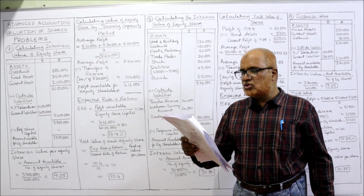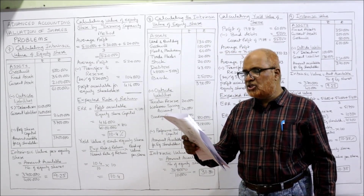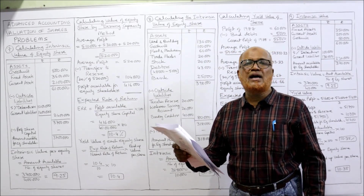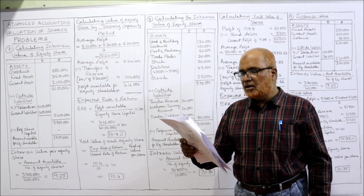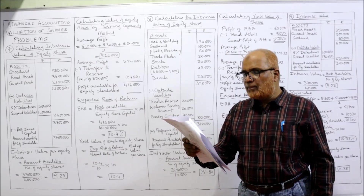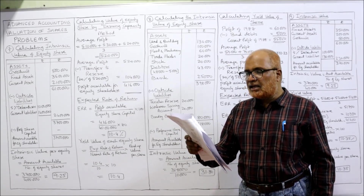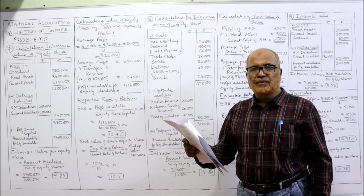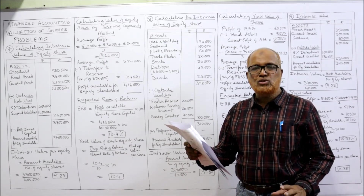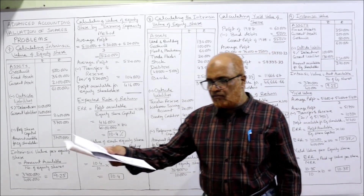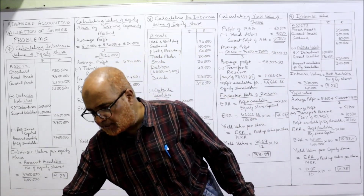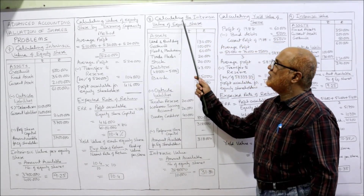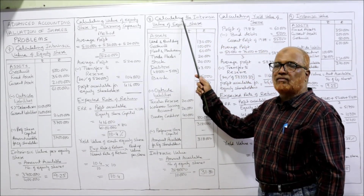Shares of similar companies quoted in the stock exchange yield 12% on their market value — this is the NRR. Goodwill of the company may be taken at 1,00,000. So again, we have to calculate the intrinsic value and yield value. First, we'll calculate the intrinsic value.